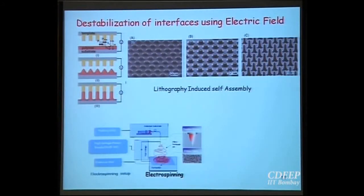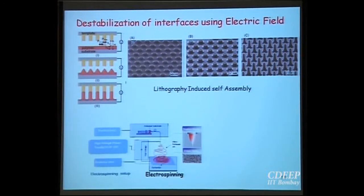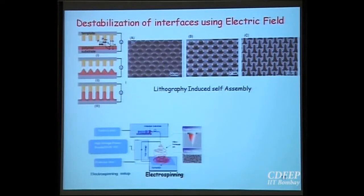You can destabilize interfaces with electric fields and create patterns from them. By using a patterned electrode and applying an electric field, you can get nano or micro patterns — known as lithographically induced self-assembly. There are a variety of self-assembled structures that can be formed by electrical destabilization of the interface.